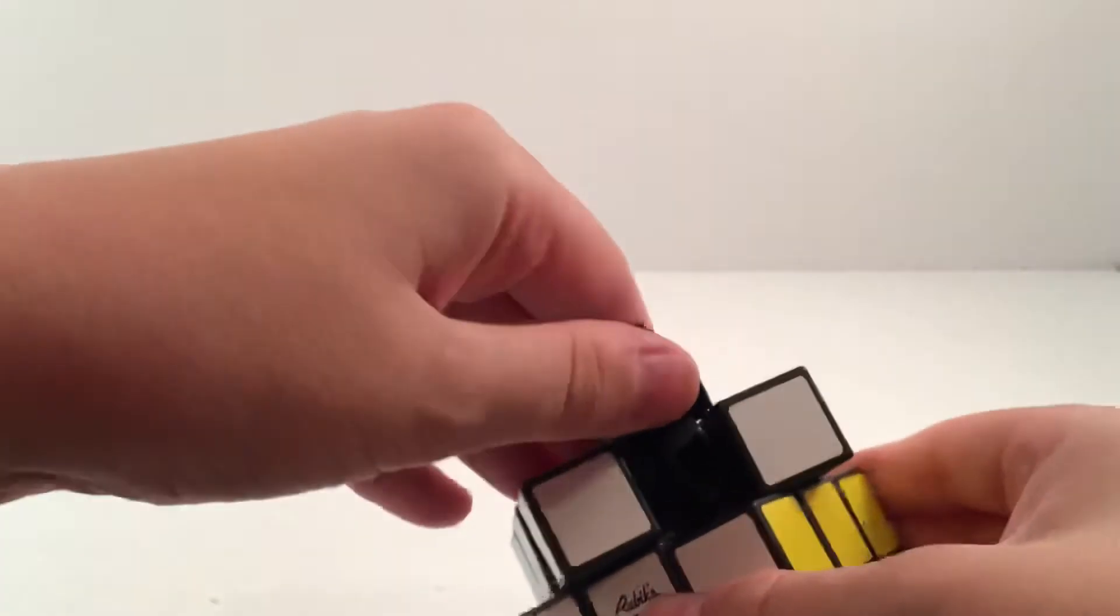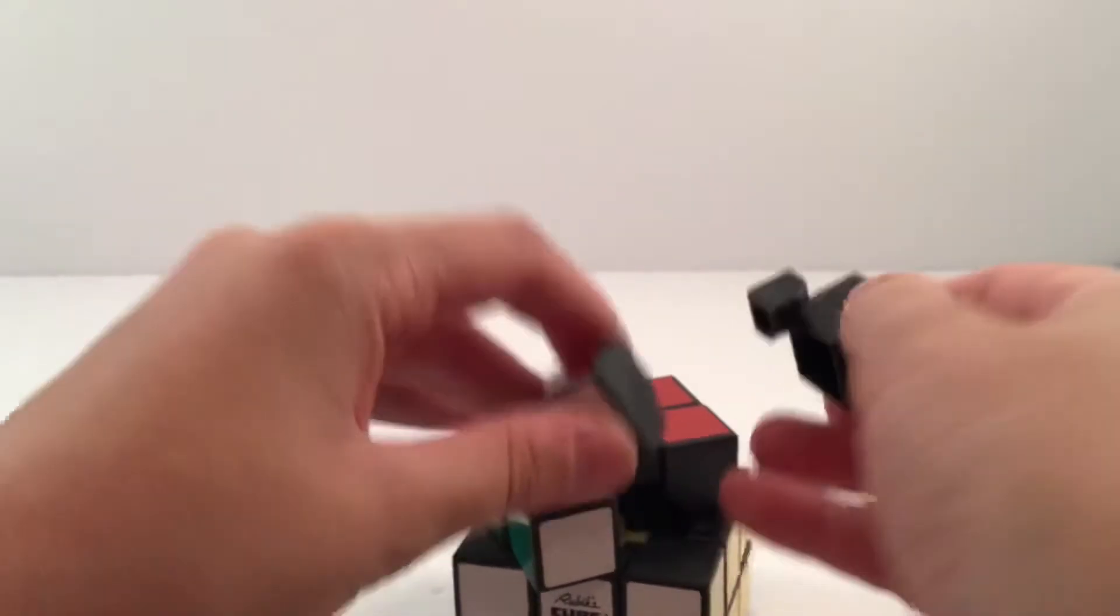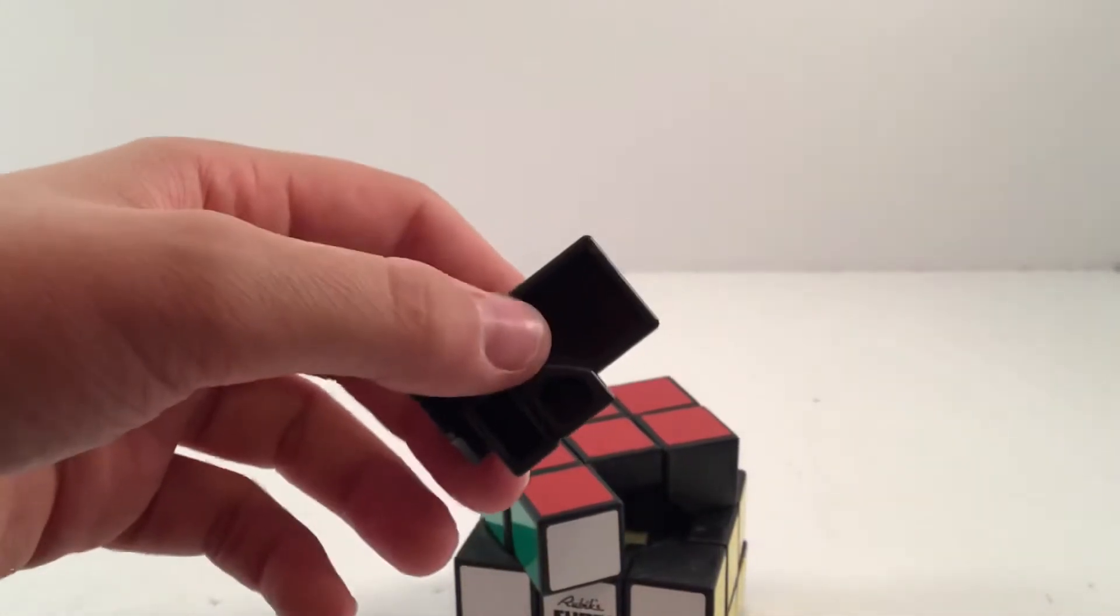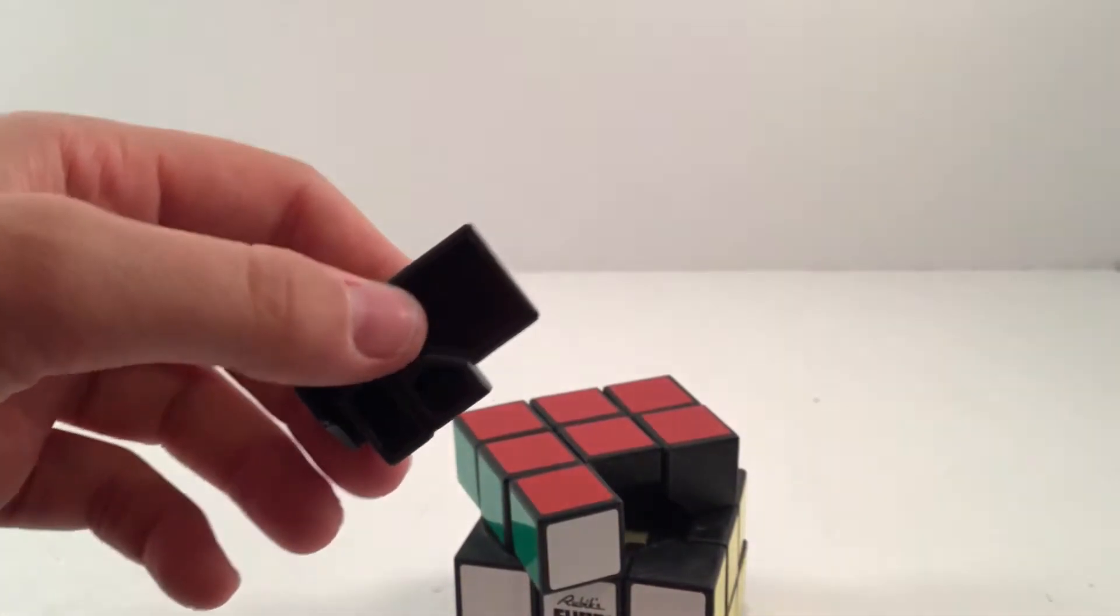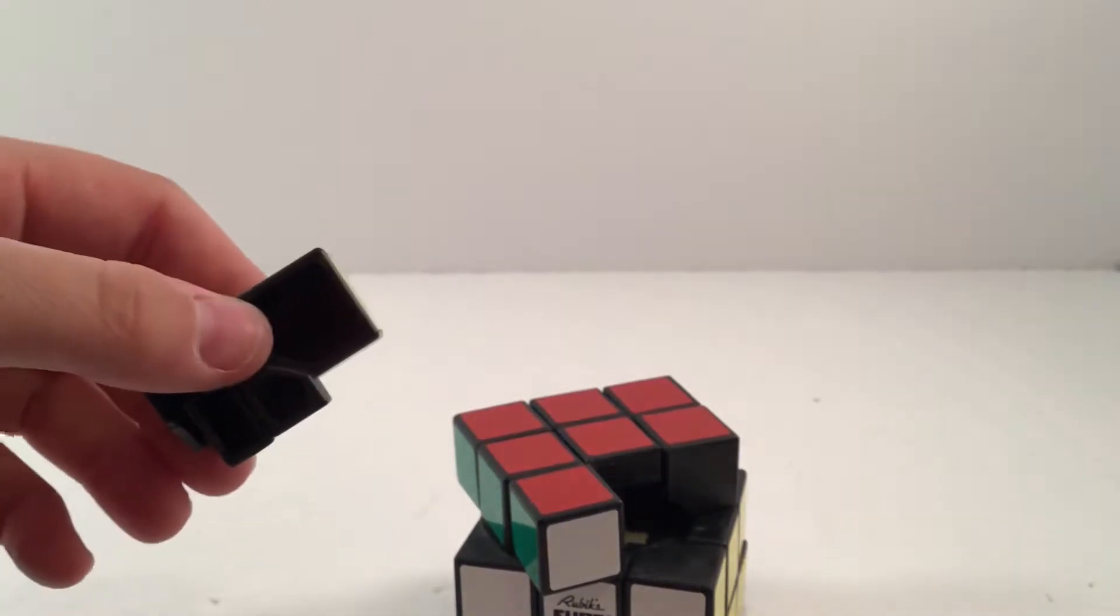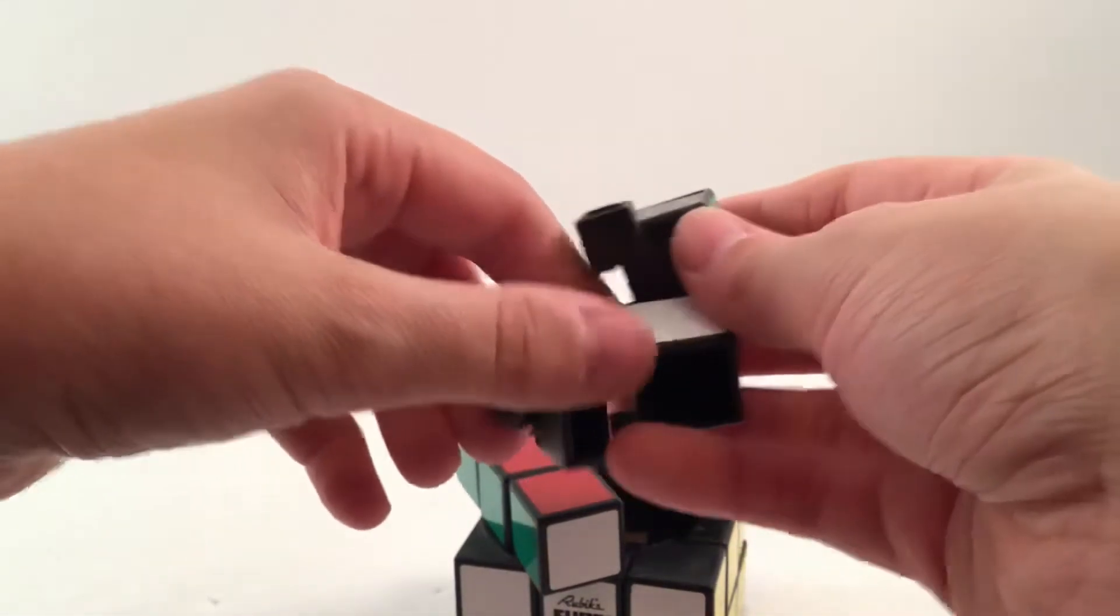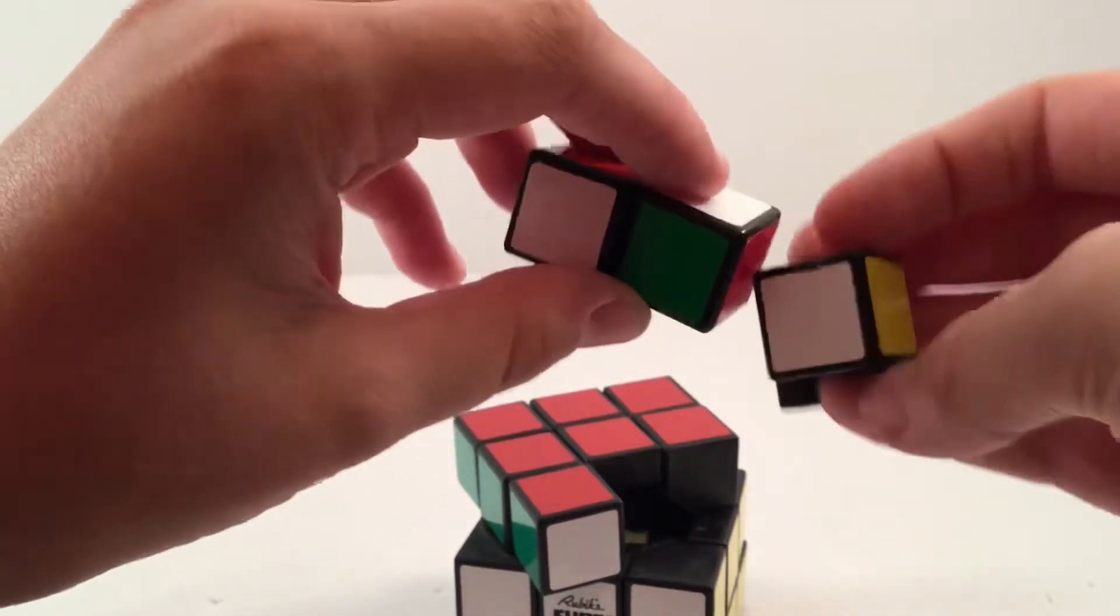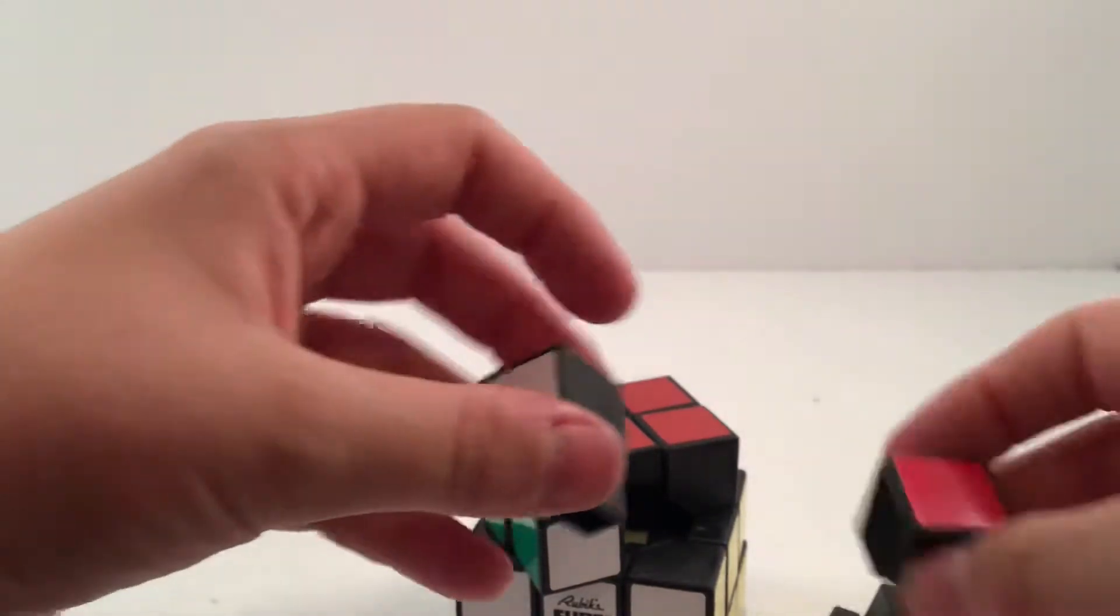If you notice, you might notice the pieces are the same as, let's say, a more modern Rubik's brand cube. Like here are the corners, they look the same.